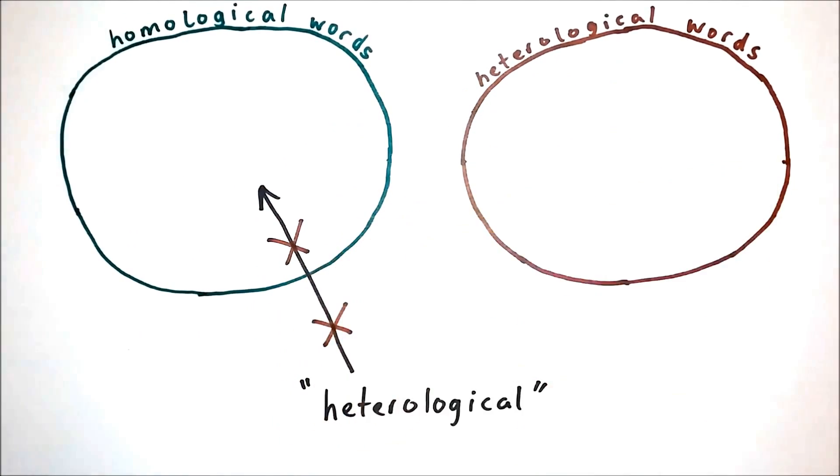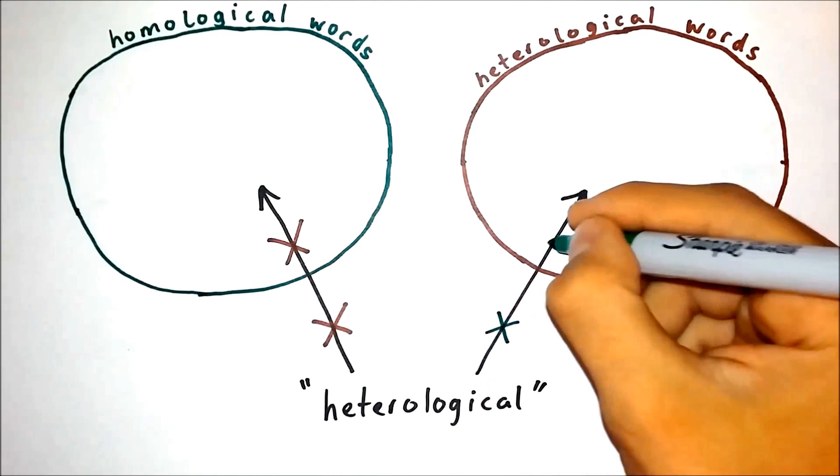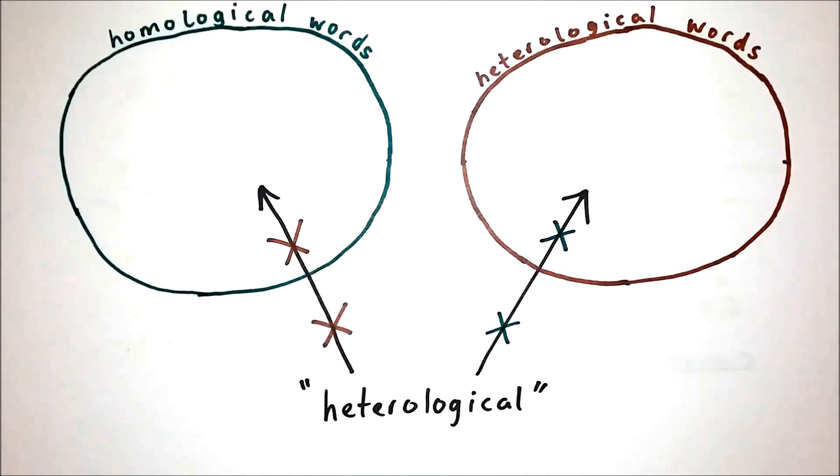But if we now conclude that the word heterological is heterological, that is, does not describe itself, then it cannot be heterological and must be homological. Either way, we are led to a contradiction and must conclude that the word heterological neither describes nor does not describe itself.